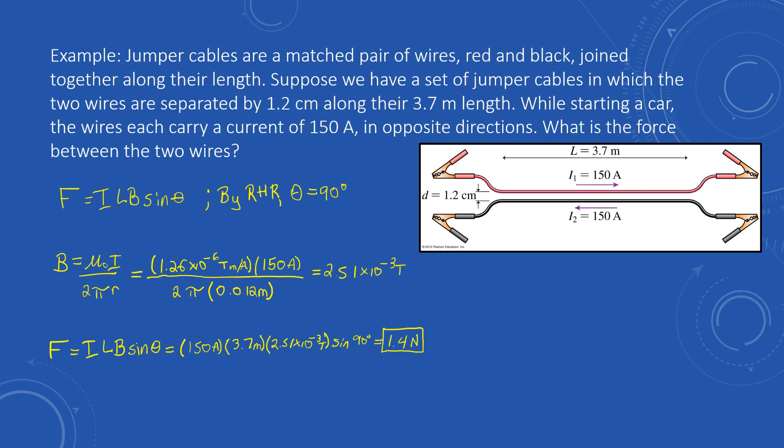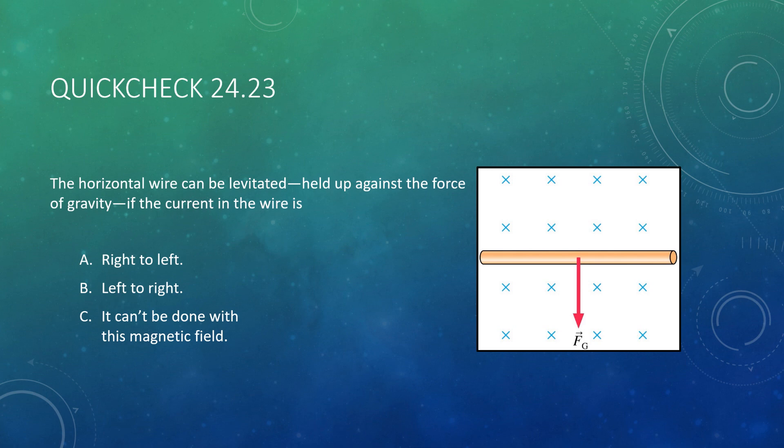Let's conclude with a couple quick checks. The first question: the horizontal wire shown can be levitated — in other words, held up against the force of gravity — if the current in the wire is in what direction? Or can we not determine this? Think about what you would have to do to levitate the wire and what direction the current would have to be.